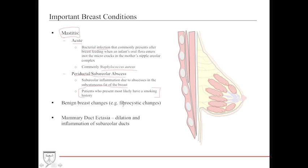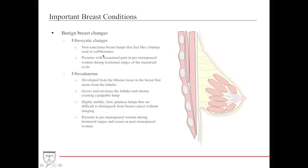Other benign breast conditions include fibrocystic changes and mammary duct ectasia. Fibrocystic breast changes are non-cancerous lumps that often feel like a bumpy road or cobblestones — a common clinical description. They usually present with occasional pain in premenopausal women, increasing and decreasing in size based on hormonal surges during the menstrual cycle. Fibroadenomas are often confused with fibrocystic changes; they develop from fibrous tissue stemming from the lobules and envelop the lobules and stroma, creating a palpable lump but not a cobblestone appearance.